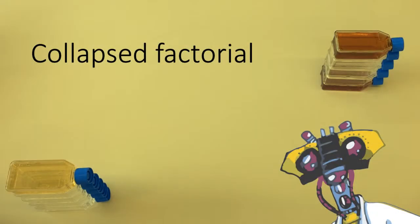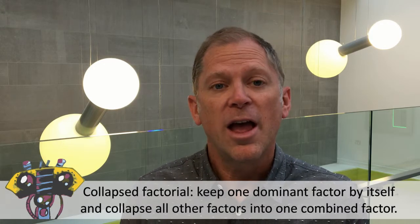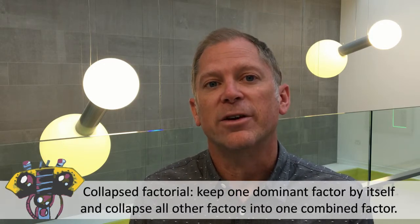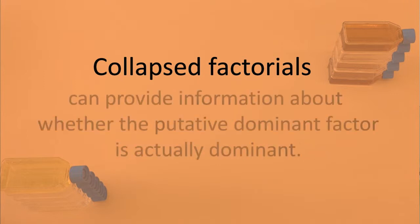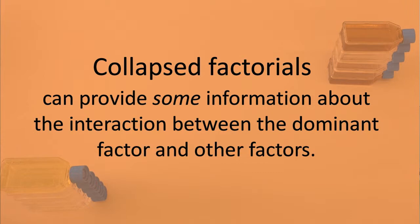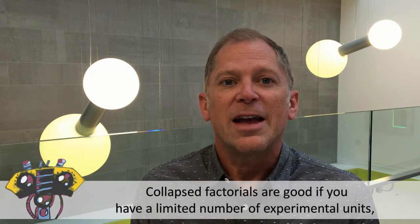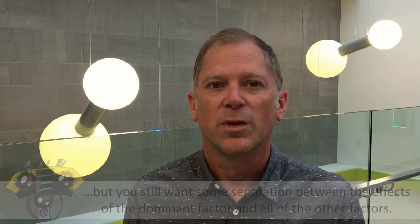Now let's talk about the collapse factorial. The collapse factorial is a good design when you have one factor that you're most interested in, say a dominant factor, and a number of other factors that you collapse all together into one combined factor. Collapse factorials are good for projections and also give you some mechanistic understanding. For example, it can provide information about whether the putative dominant factor is actually dominant, whether the combined effect of other factors and their interactions with each other are important, and some information about the interaction between the dominant factor and other factors. This is a good design if you have a limited number of experimental units, that you still want to get some separation between a dominant factor and all of the other factors. You have to accept that the other factors will all be confounded with each other. So the information you get is a little bit limited.